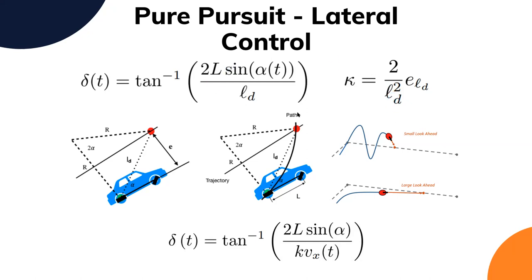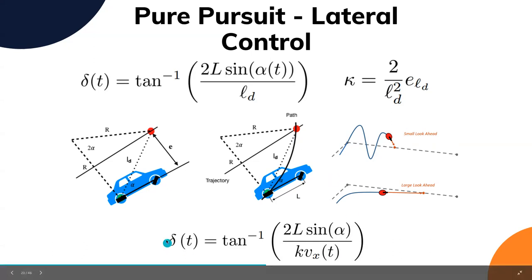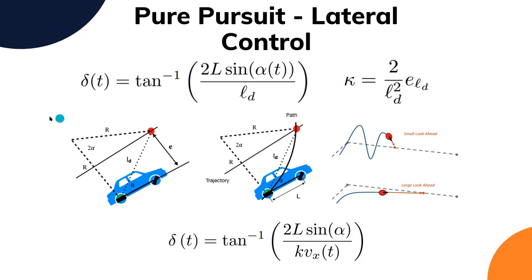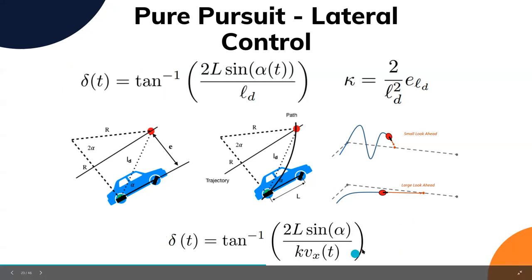This vanilla pure pursuit algorithm suffers when speed changes — an LD tuned for low speed won't work for high speed and vice versa. To tackle that velocity problem, we replace the look-ahead distance by dynamically calculating it: look-ahead distance = k × velocity, where k is a gain and velocity is live. So at small speed you choose a small look-ahead distance, and at fast speed you need more time to reach the look-ahead point.